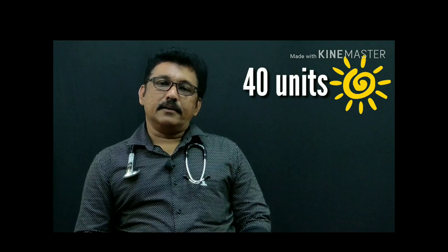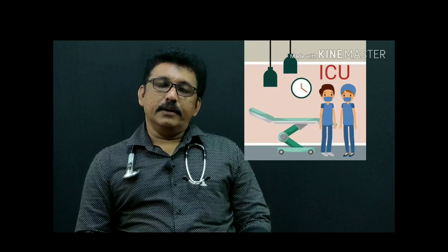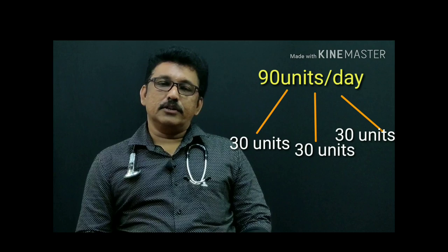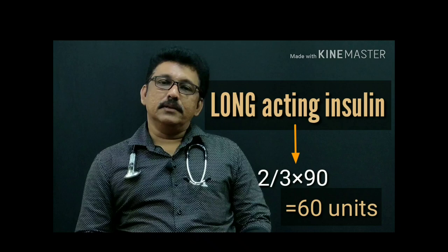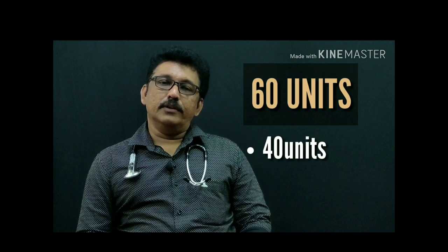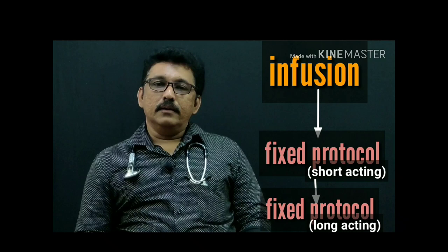So 40 units in the morning and 20 units at night. To recap: in the ICU I was giving 100 units; I reduced to 90 units in 3 times daily fixed dose; then switching to long-acting or mixed-acting insulin I take two-thirds of the total dose, which is around 60 units — 40 units in the morning and 20 units at night. This is how you switch from infusion to fixed protocol, then from fixed short-acting to fixed long-acting protocol.